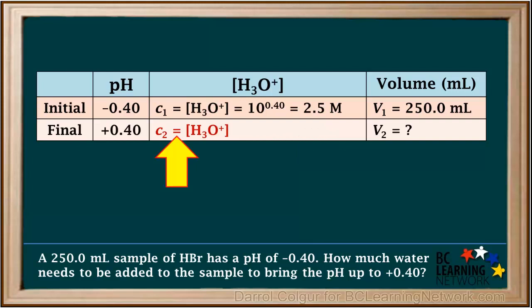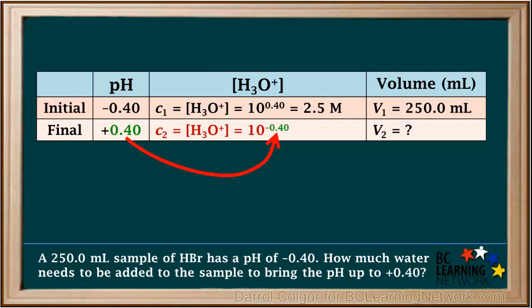Now we'll find the hydronium ion concentration in our final solution, which we'll call C2. Again, we use the formula: hydronium ion concentration is 10 to the negative pH. This time we substitute positive 0.4 in for the pH, so 10 to the negative 0.4 gives us 0.40 molar. Note that 0.40 happens to be the antilog of negative 0.40 — a rare case where the antilog of a number is just the negative of that number when rounded to significant figures.